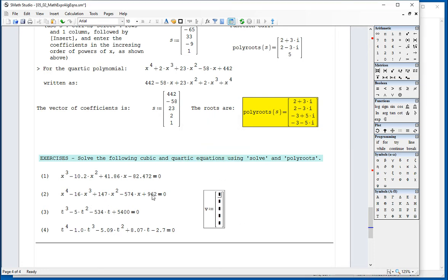And then we're going to start writing the elements from the smallest power, which is 962 here, to the zero power. And then in increasing order of x, the next one will be negative 574. The next one is 147. The next one is negative 16. And the next one is a one.